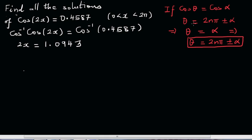So we have said if θ equals α, this implies θ is 2nπ plus or minus α. You can compare this with θ with 2x and α with this. So 2x equals 2nπ plus or minus 1.0943.